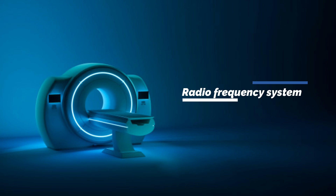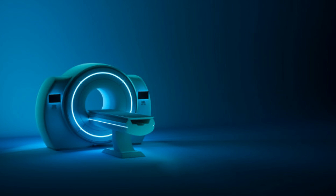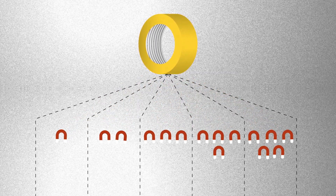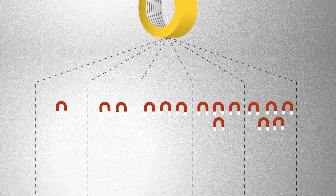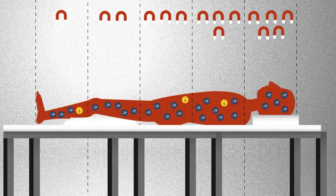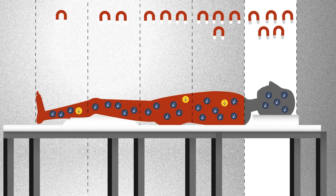The third component in MRI systems is the radio frequency system. The radio frequency, or RF, transmission system consists of an RF synthesizer, power amplifier, and transmitting coil.